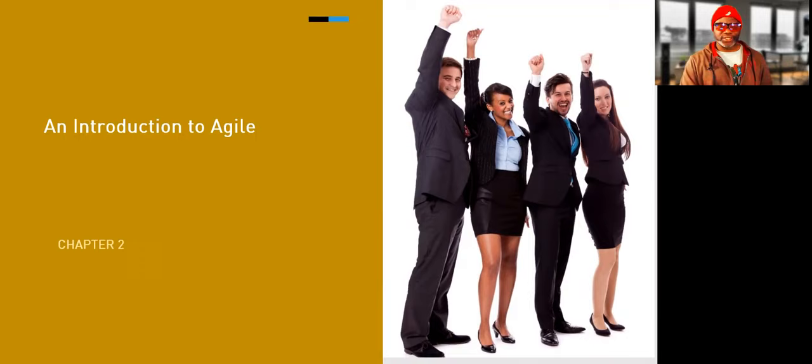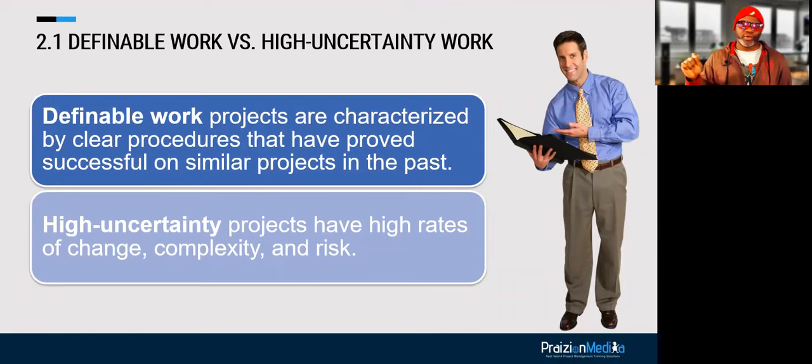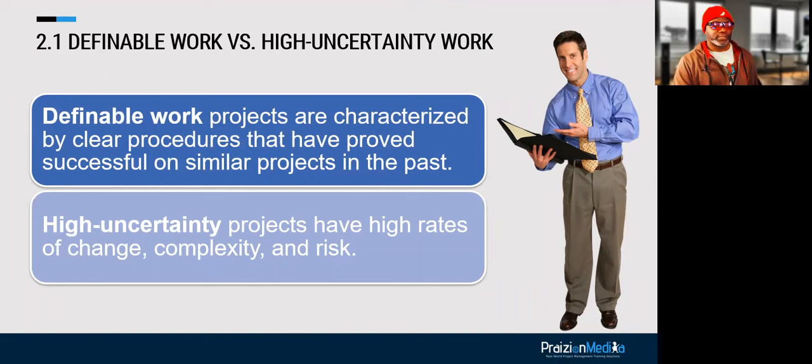Let's go to chapter two, called an introduction to Agile. Two types of work: definable work and high uncertainty work. If you're working on high uncertainty projects, you want to use an Agile approach because it's better to cope with change and complexity. For definable work, it's better to use a predictive approach.